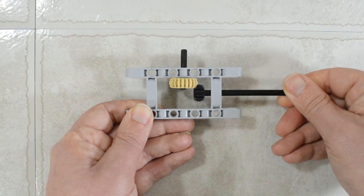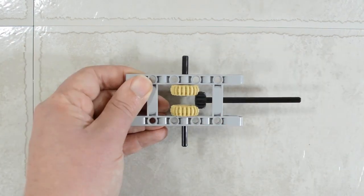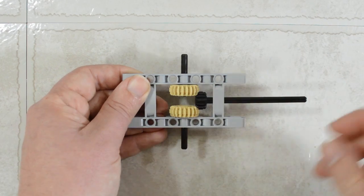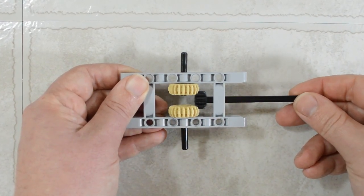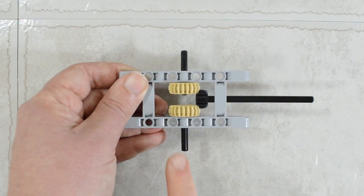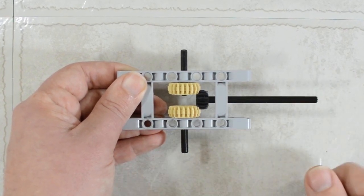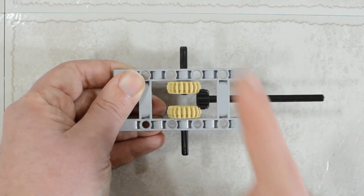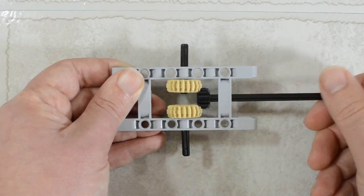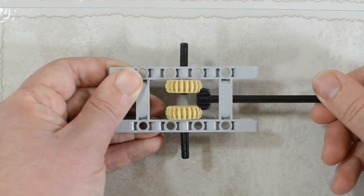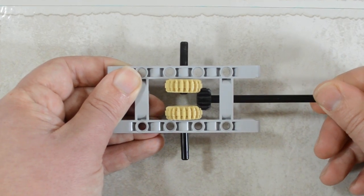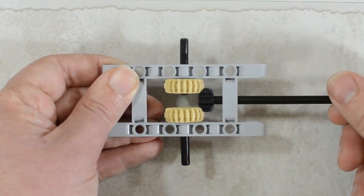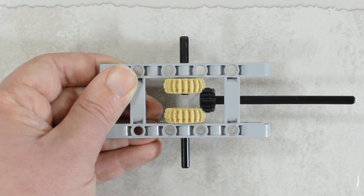So now notice what happens when we put a bevel gear on the other side. So if we turn our drive, this one is now turning away from the rotation of that axle. So one's turning this way and the other one is turning this way. Now if we switch our direction of drive, the opposite will happen. So now this one is going to start turning the same rotation as the axle and this one is going to turn away.